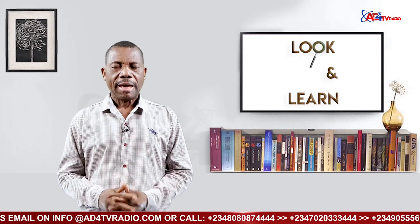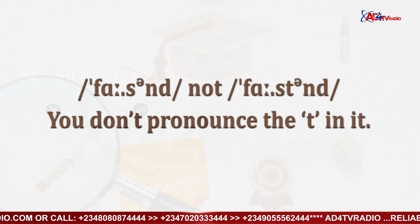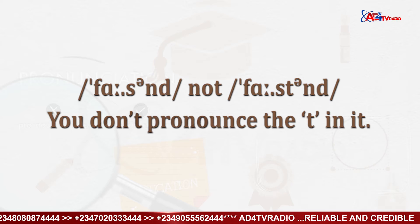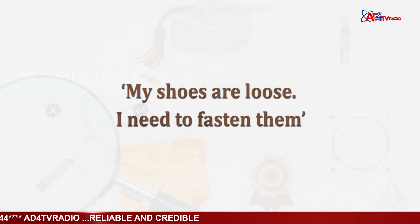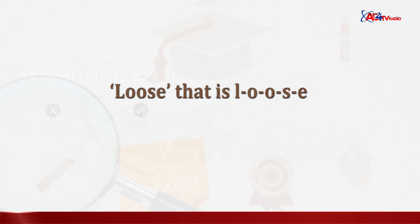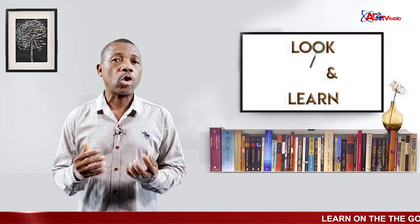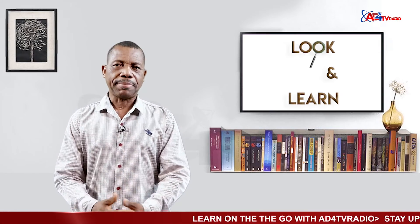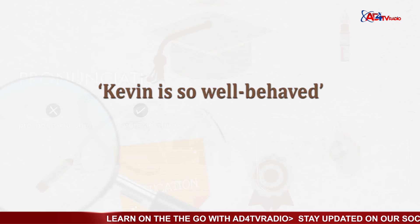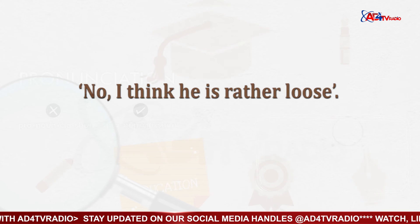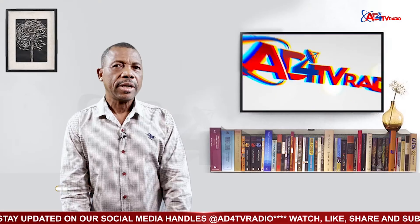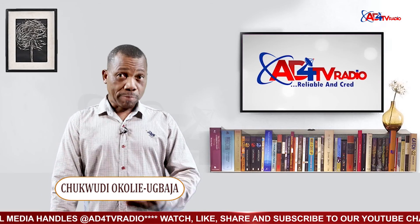Please note the word is 'fastened,' not 'fastened' — you don't pronounce the T in it. Here's an example: 'My shoes are loose; I need to fasten them.' 'Loose' could also refer to behavior that is not quite respectable. For example, you might say Kevin is well behaved, to which someone replies, 'No, I think he's rather loose.' That's it for this edition of Look and Learn — goodbye!